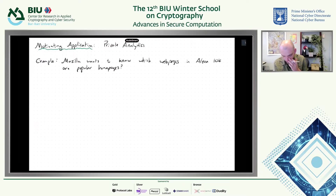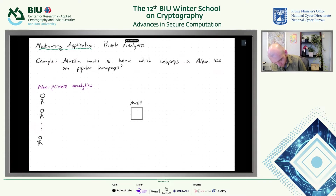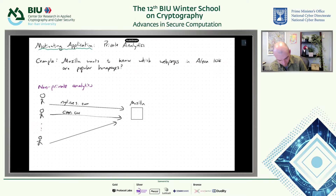The way this would work with a non-private scheme is that you have tens or hundreds of millions of Firefox users, and Mozilla runs some data collection service where everyone just sends their homepage to Mozilla. So your browser phones home periodically and sends back what your current homepage is. Say Alice's homepage is NYTimes.com and Bob's homepage is CNN.com and so on.